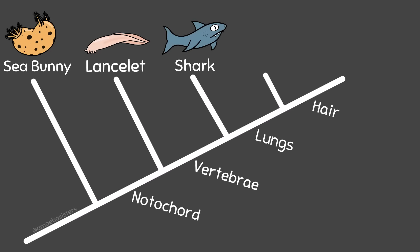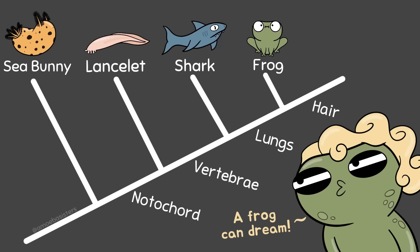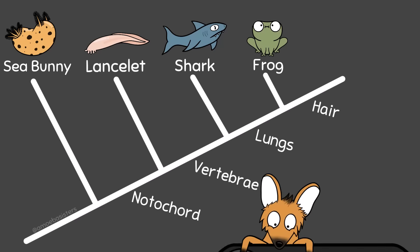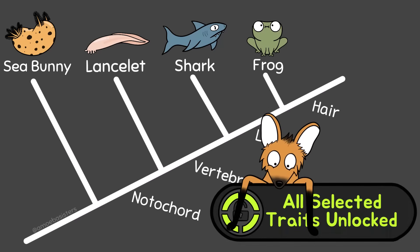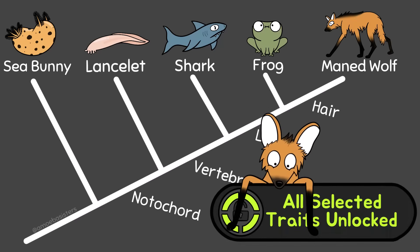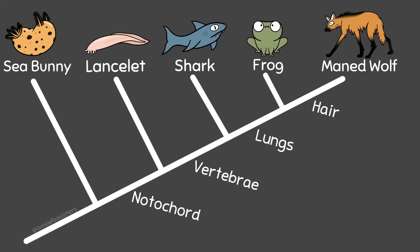The shark has both a notochord and vertebrae, so it goes past those two characteristics. Next, the frog — it has a notochord, vertebrae, and lungs, but no hair. Finally, the maned wolf has all of my selected characteristics. You can see that an organism only gets placed beyond a listed characteristic if it actually has that characteristic.